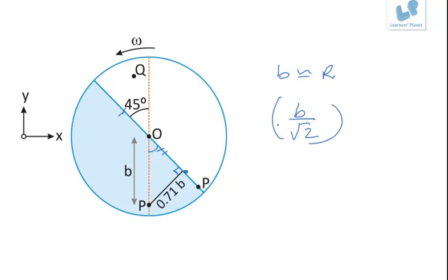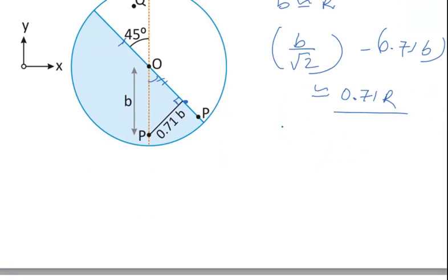B sin 45. So this value will be equal to 0.71 times B, or we can write this as 0.71 times R. Now it is given to us that the range of any of the pebble P or Q is always less than half of the radius. And this value is more than the half of the radius.